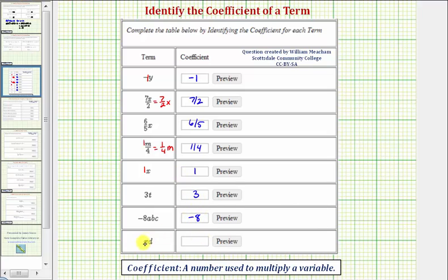Now for our last example we have pi d, which means pi times d, and since pi is a constant, it does not vary, the coefficient is pi. I hope you found this helpful.